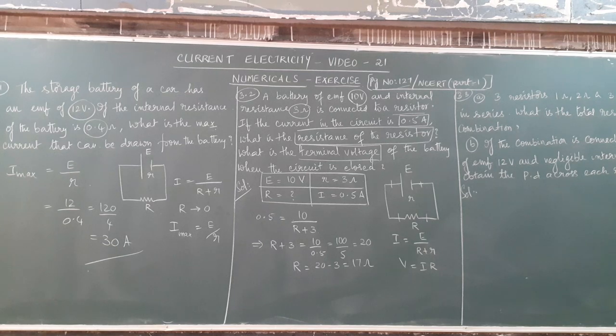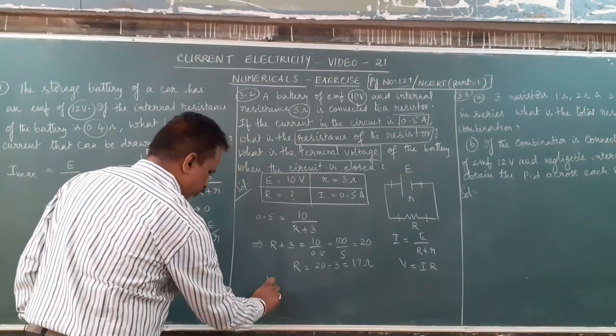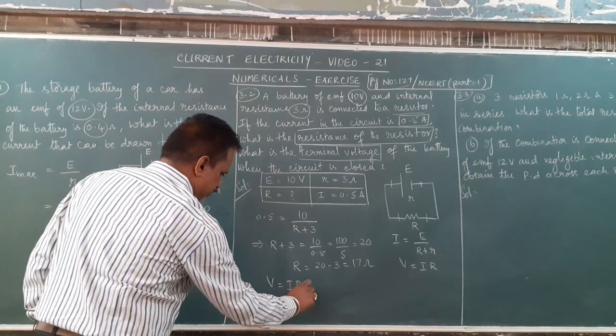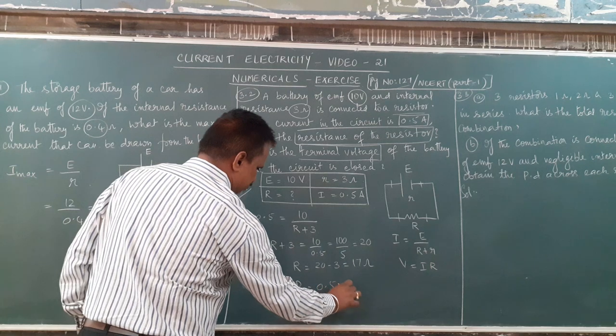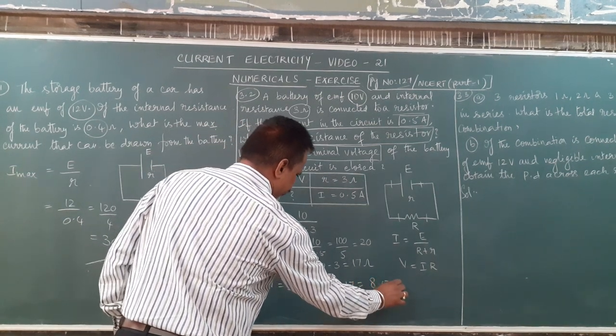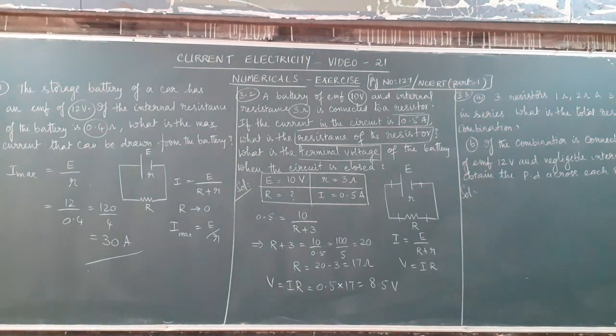Now we go for the terminal potential difference. The formula is V equal to IR. What is the value? I is 0.5 into resistance 17, you will get 8.5 volts.